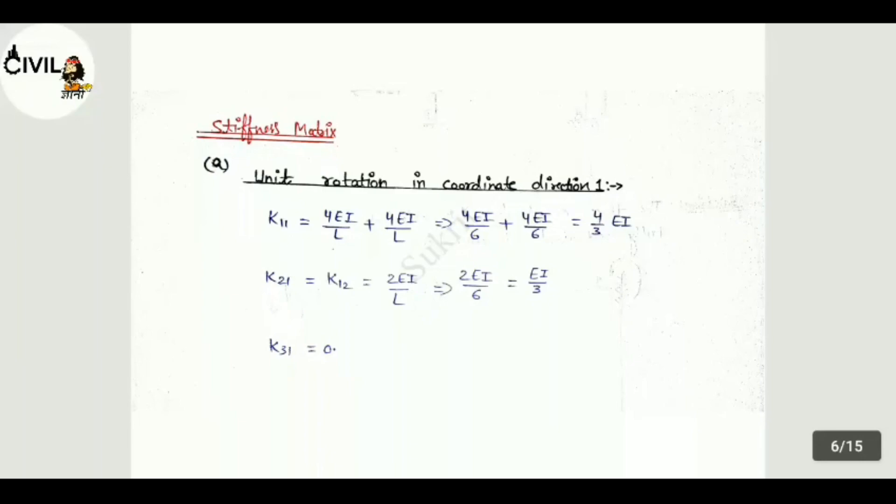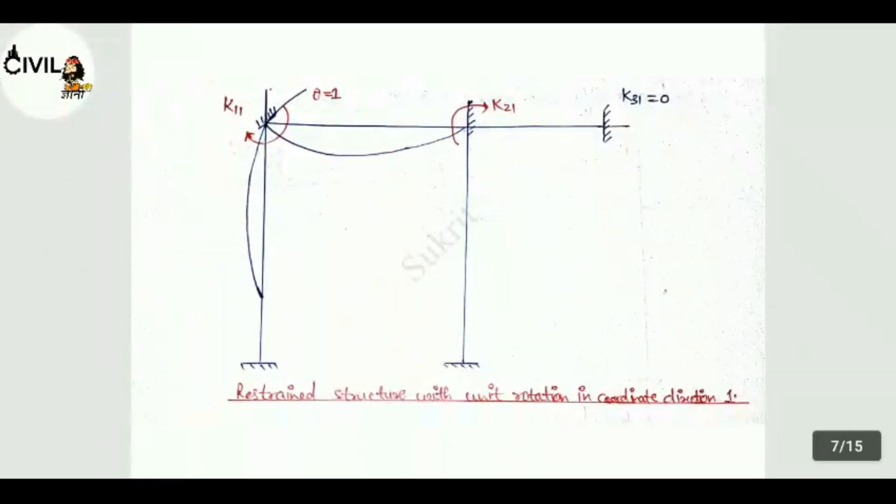K31 will be zero. It means K11 has force at 1 due to unit displacement at 1. At this point we apply unit rotation, at that point we take 4EI/L, and side portion we take 2EI/L. See the diagram. This is your restrained structure with unit rotation in coordinate direction 1. This gives values of K11, K21 and K31.